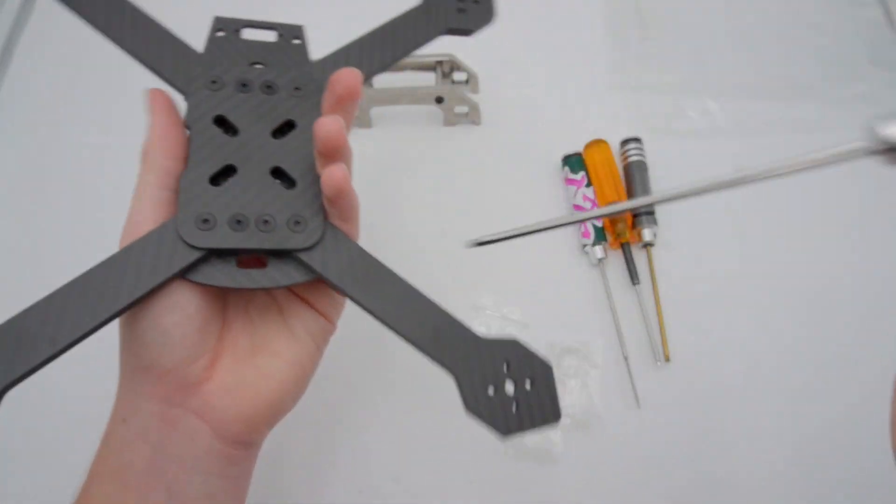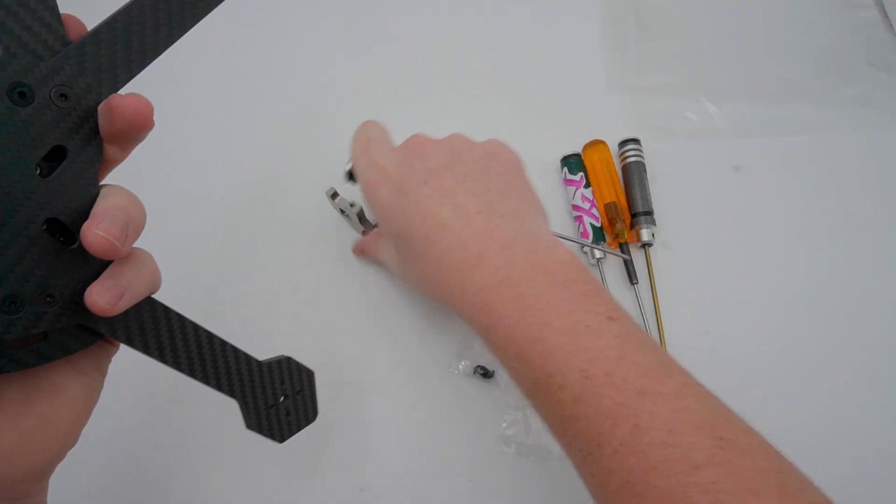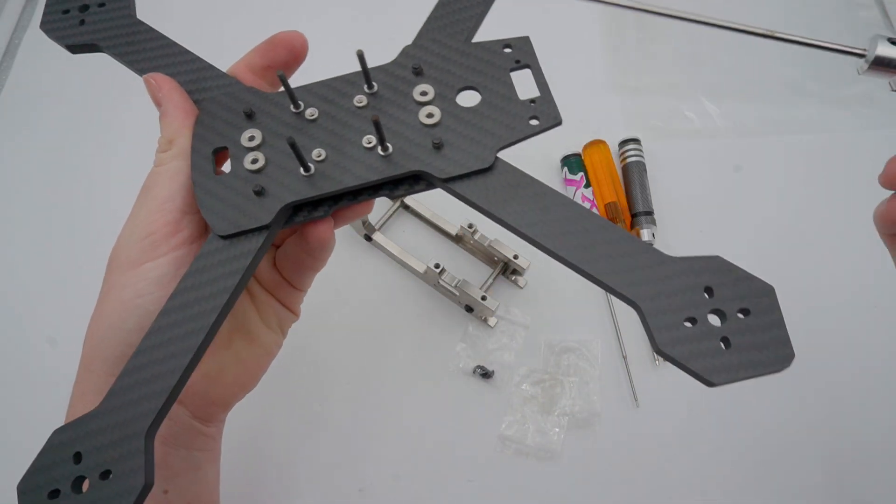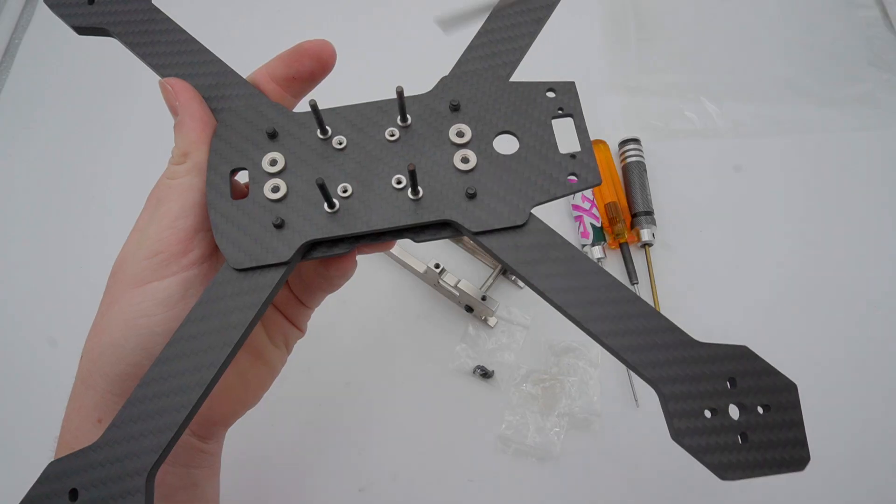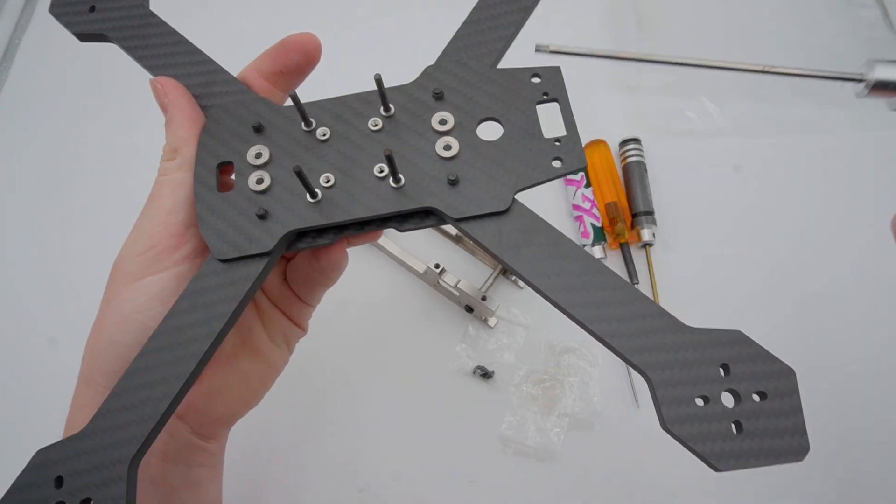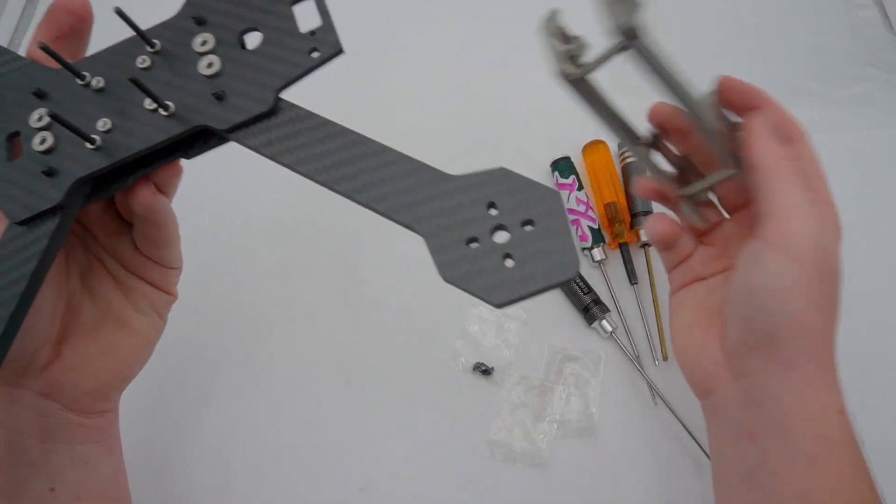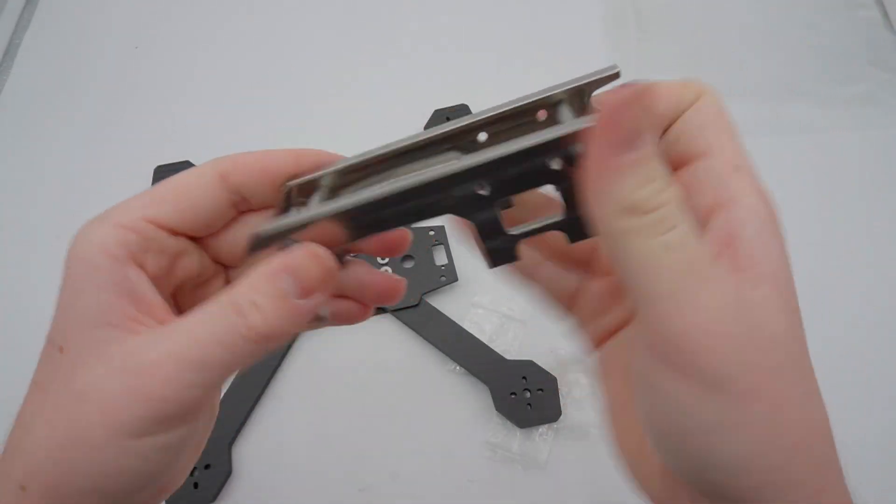So now that you have those tightened down, you can actually get your pod and I can show you the orientation of this frame. So the back is going to have this hole, this literal circle, and then the front is going to have this more oval. So this is the back, this is the front. And then you're going to get your pod and the front of the pod is this and this is the back of the pod.